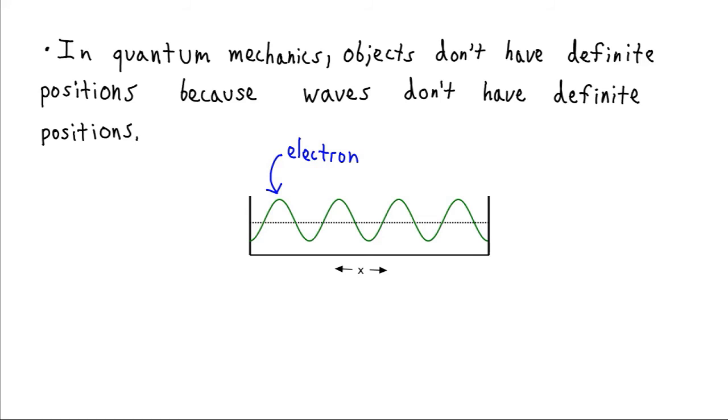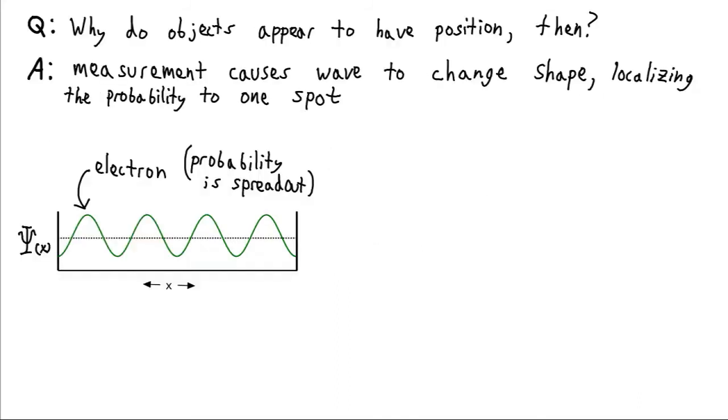And so that's kind of why our sense, our intuition about position breaks down. Well if everything's a wave and waves don't have position, then why is it in our day-to-day experience we think that they do? We think that objects have position. Well the answer is that when we measure something, i.e. we interact with it in some way, that's going to cause its wave to change shape.